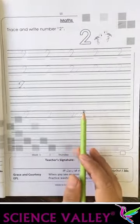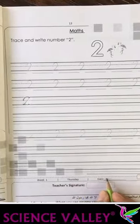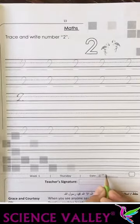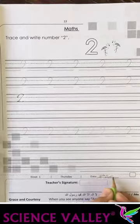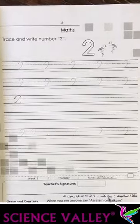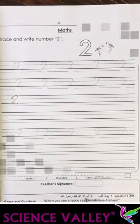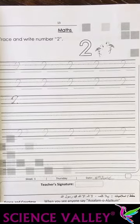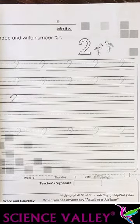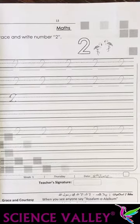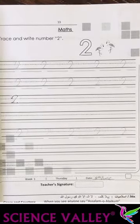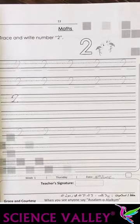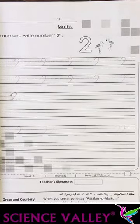Week one, day Thursday, date 18 June. Islamiyyad question: Pahala kalmah tayyib, tayyib mane paak, La ilaha illallah Muhammad Rasulullah. Question: When you see anyone say Assalamu alaikum. EPL question: Practice washing hand with soap. Today's lesson is over. Hope you have enjoyed this lesson. Allah Hafiz, stay home and stay safe.